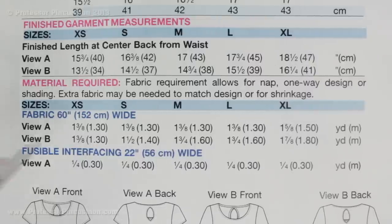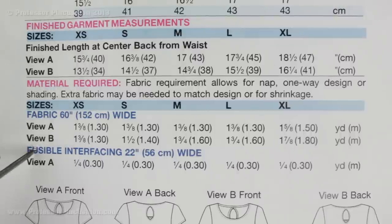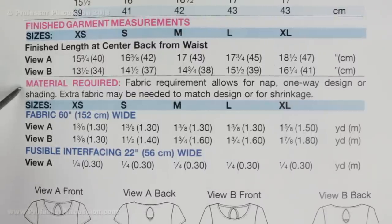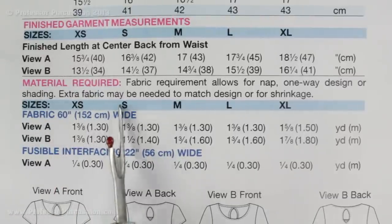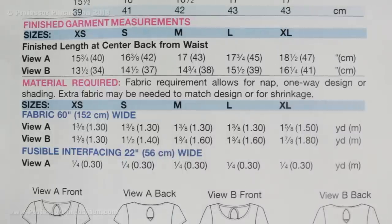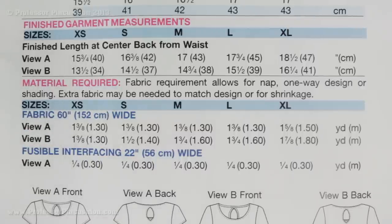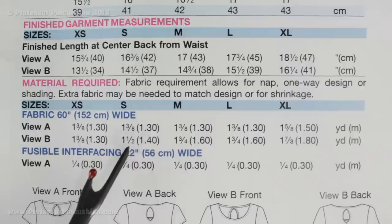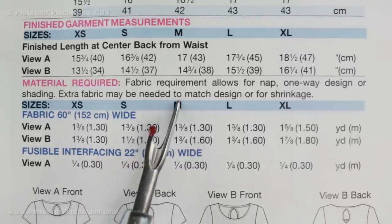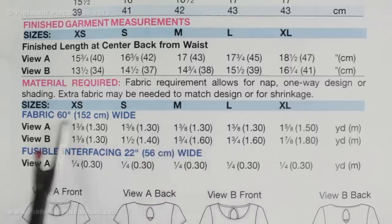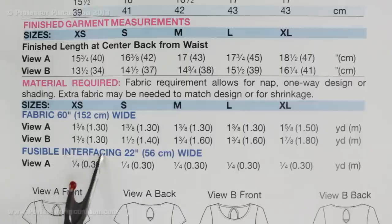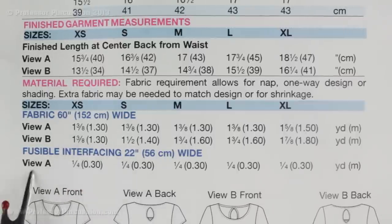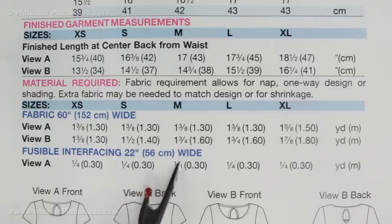Here's another example with my Quiksew pattern. I tend to find this chart at the bottom portion of the back of the envelope, listed under the heading 'material required.' The difference is the sizes are in letters instead of numbers. In this case the fabric width given is 60 inches, so if you're using fabric that's 45 inches wide you may need a little bit more fabric than what's listed. You pick your view — let's say view A — go across the row to size medium, and you'll need 1 and three-eighths yards for 60 inch width fabric. For view A you'll also need fusible interfacing — a quarter yard for size medium.